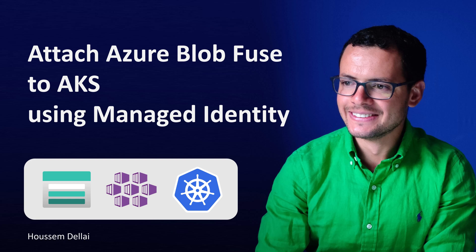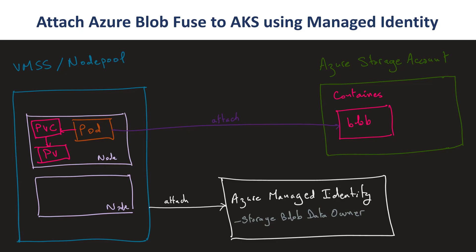In this video, we'll learn how to attach an Azure BlobFuse to an AKS (Azure Kubernetes Service) cluster using managed identity. Stateful applications hosted in a Kubernetes cluster might use an external storage solution like Azure Disk, Azure File Share, or Blob containers. For Blob, you have two options: NFS or BlobFuse. For BlobFuse, you have different authentication options: storage account key, SAS token, service principal (SPN), or the recommended option — native Azure managed identity, which we'll explore in our demo today.